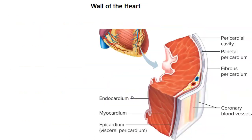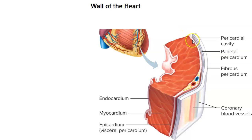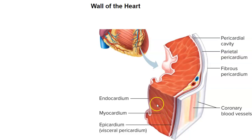Now let's examine the wall of the heart. If we could take a chunk out of the heart, we'd see a layer on the inside, a middle layer, and then an outer layer. The outer covering is the pericardial sac — the fibrous pericardium — and then just deep to that is the parietal pericardium, which folds on itself and becomes the visceral pericardium, also called the epicardium. Just deep to the epicardium, we have the myocardium — that's the heart muscle. And then the inside of the heart is lined with the endocardium.